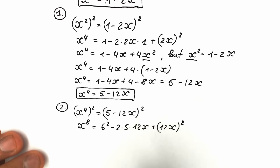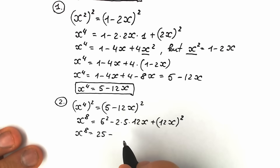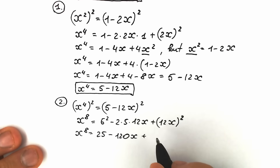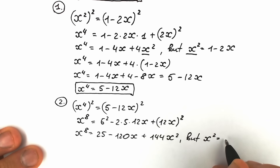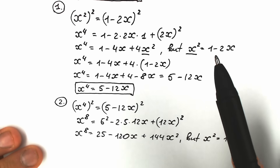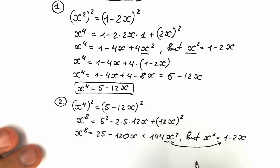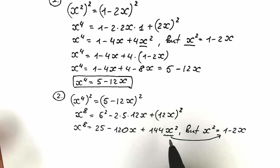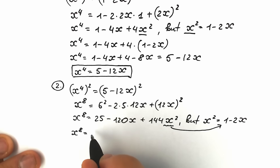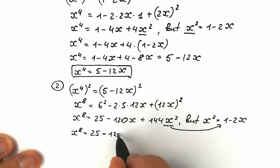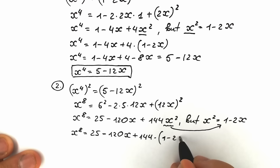This uses our classic school formula. We apply the same trick as before: x squared equals 1 minus 2x. So instead of x squared, we plug in 1 minus 2x. This reduces the power, making it easier to work with the first power of x. So x to the eighth power equals 25 minus 120x plus 144 times (1 minus 2x).